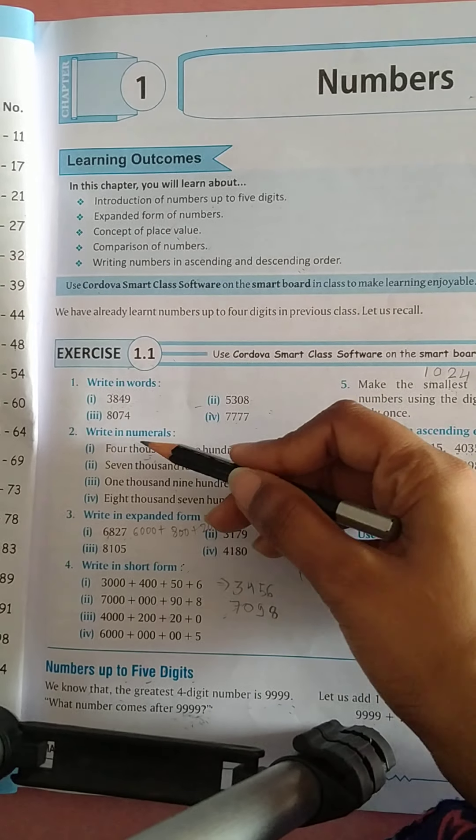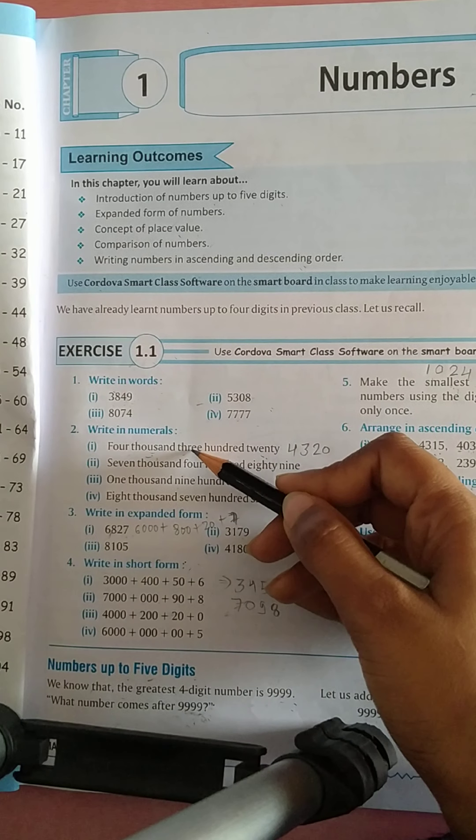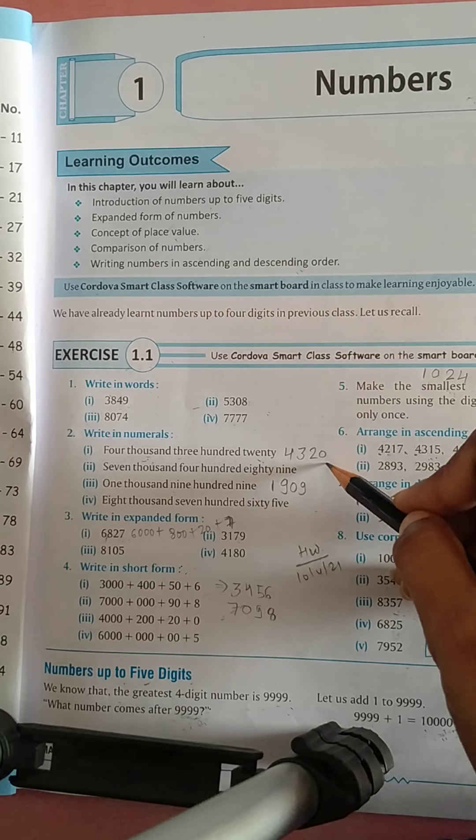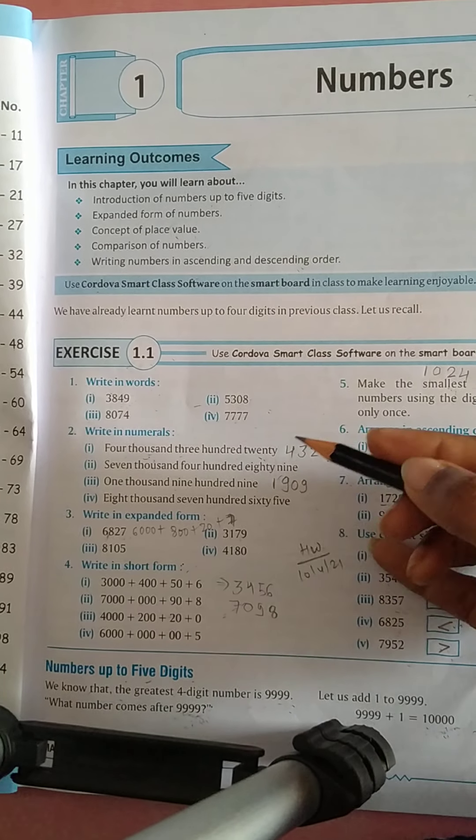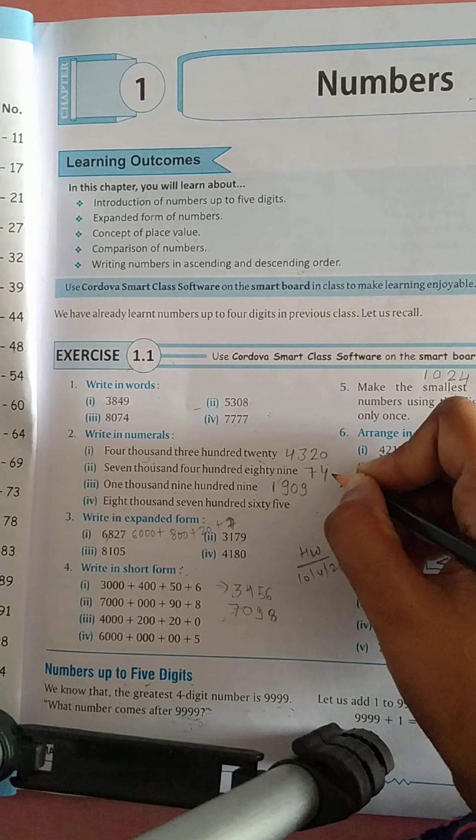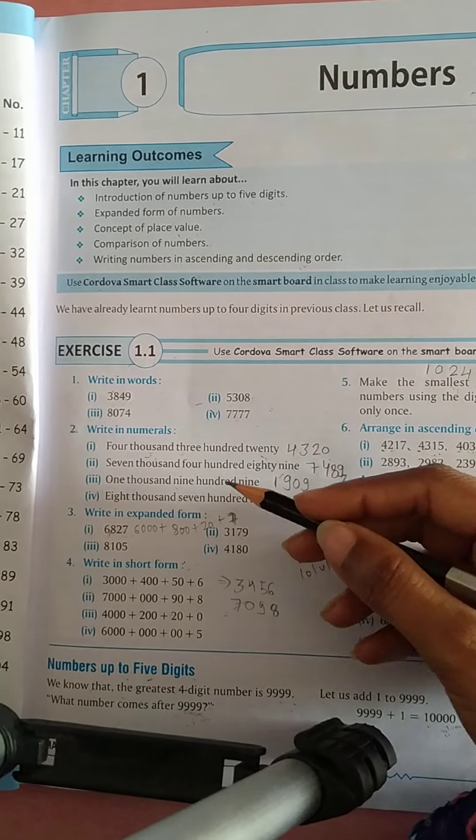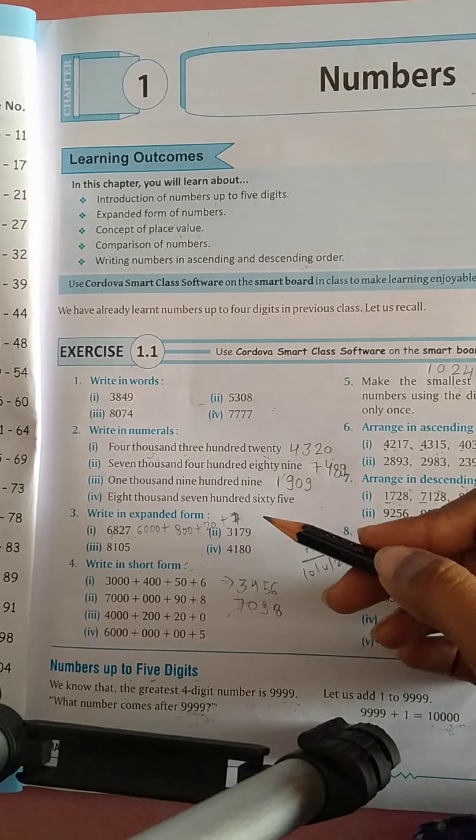Question number 2, write in numerals. 4,320, so this is 4,320. Now 7,489, so 7,489. Similarly इसी तरह से इनको numbers में write down करेंगे.